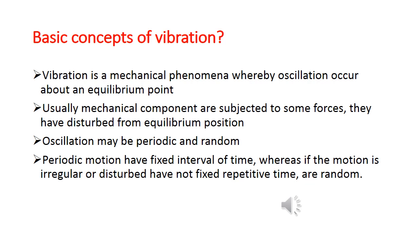We can say vibration is a type of oscillation with repetitive motion. Oscillations may be periodic or random. Periodic motion — such as the motion of a pendulum — repeats in a fixed interval of time. Random motion has no fixed interval. Examples of periodic motion include the motion of a pendulum and the motion of a shaft due to unbalance force.